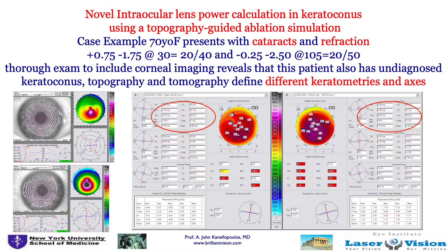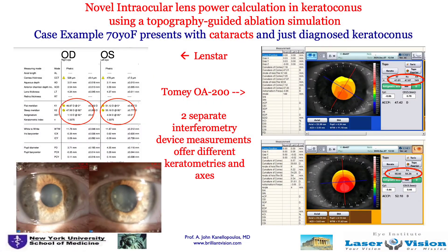The problem here is that each measurement we see differs. On the left, we're seeing the Placido reflection topographies with the Oculus device. On the right, we're seeing Pentacam images, which measure total cornea power — very important. We're also looking at the LENSTAR keratometry measurements, which measure a central circle to the vertex of 2.8 and 3.2 millimeters, and the Tomei OA-200 device, which is our second interferometer besides the IOLMaster. The difference between all these devices is that they give completely different keratometries in power and axis, because we're measuring an irregular cornea.